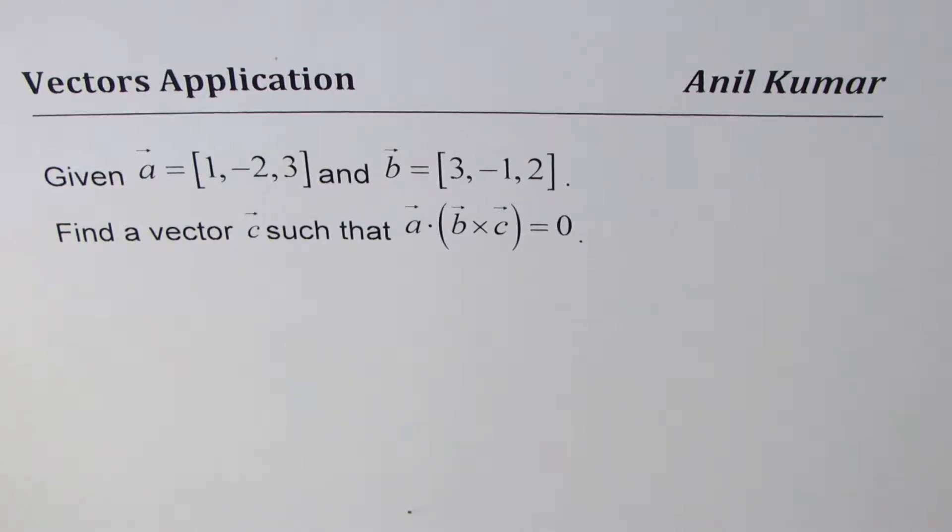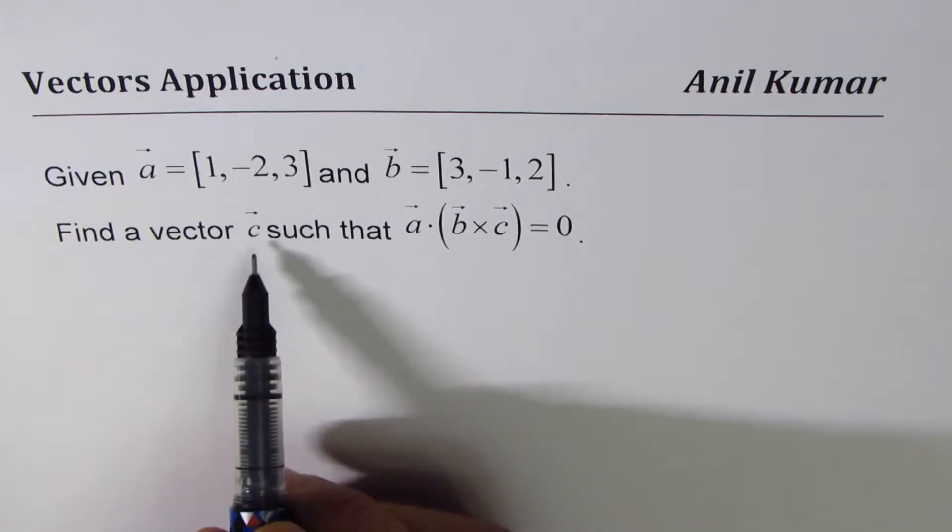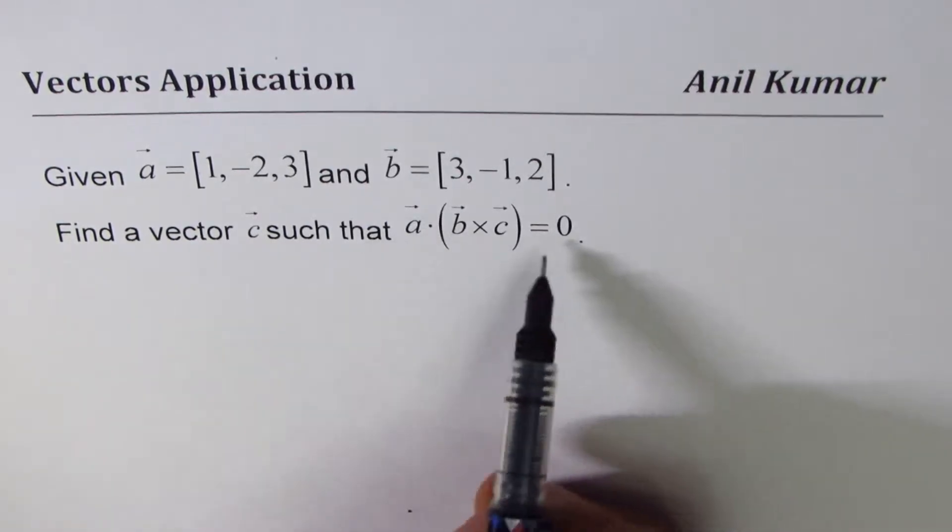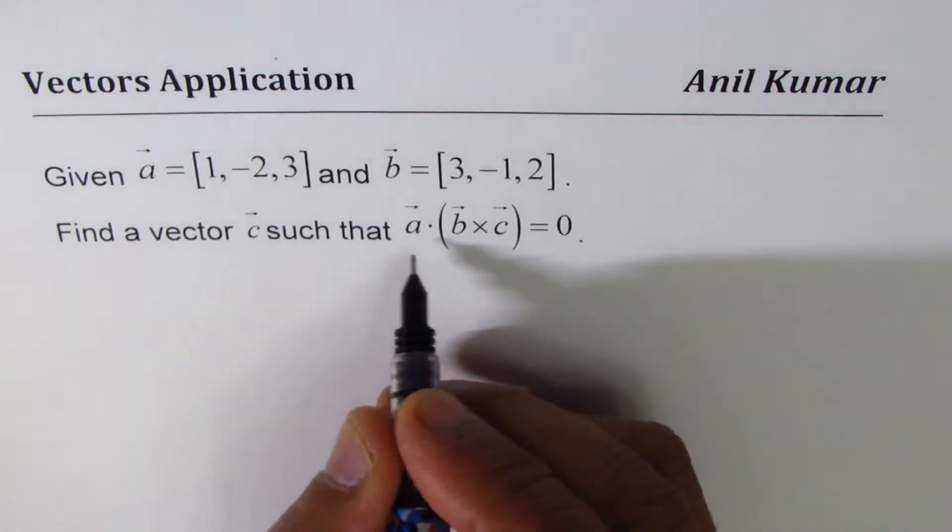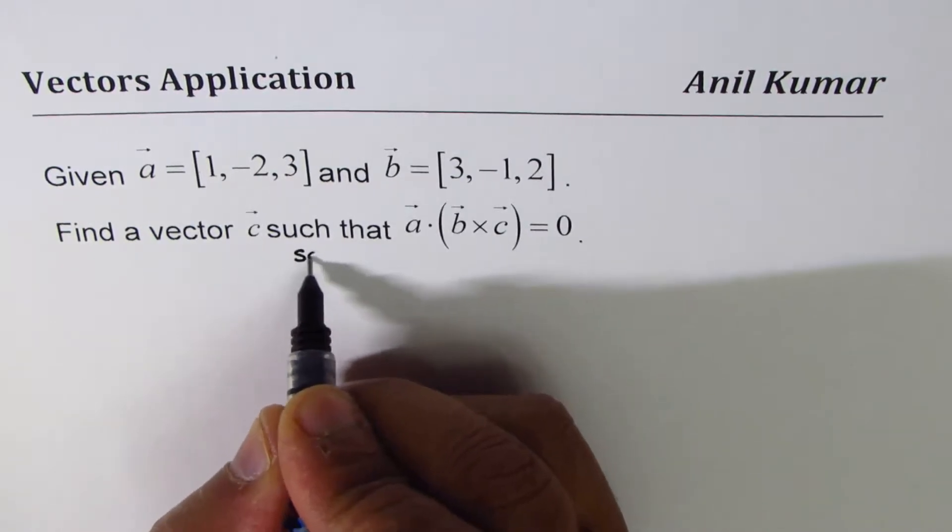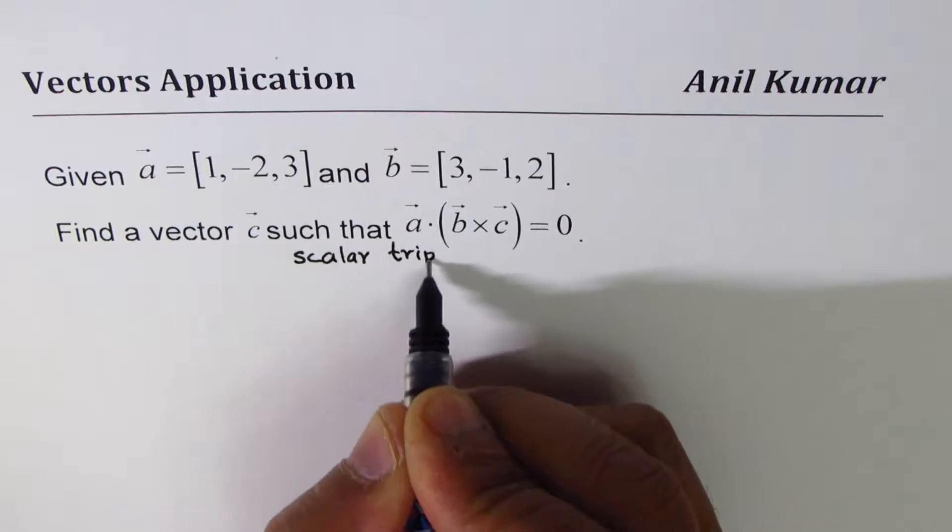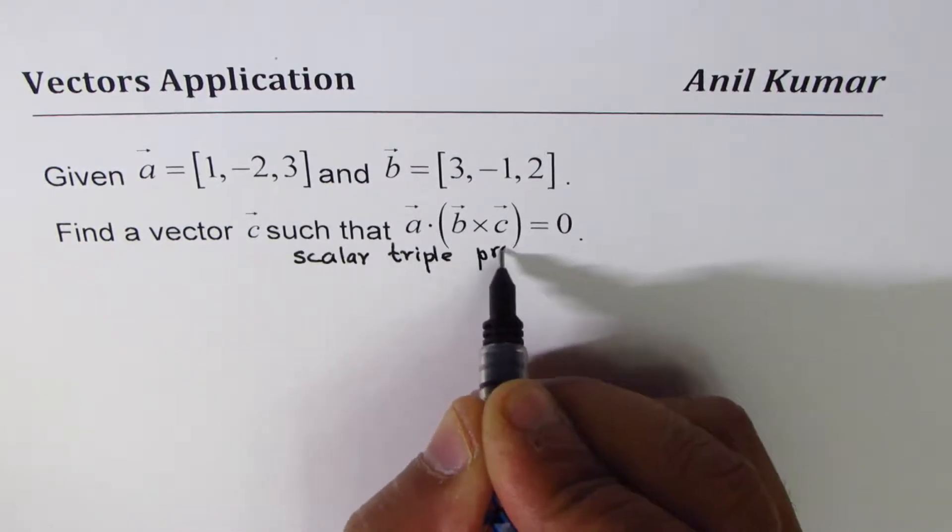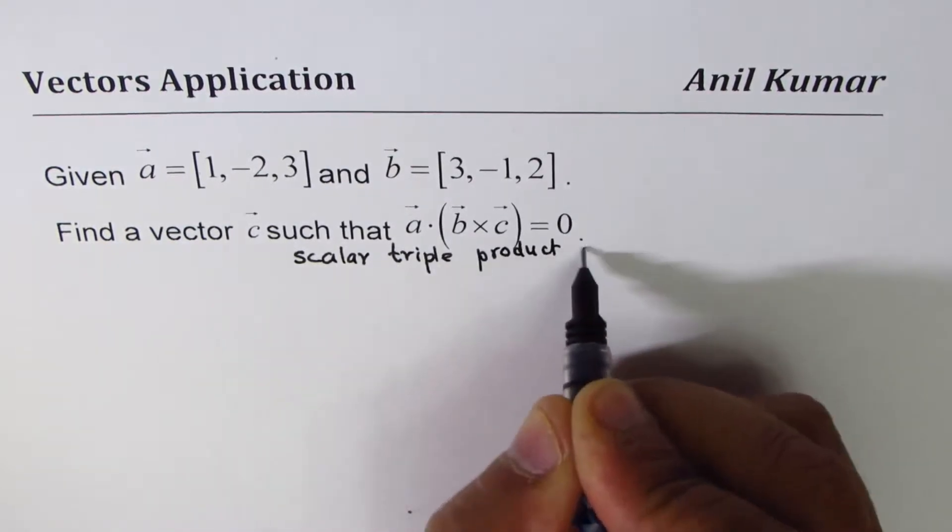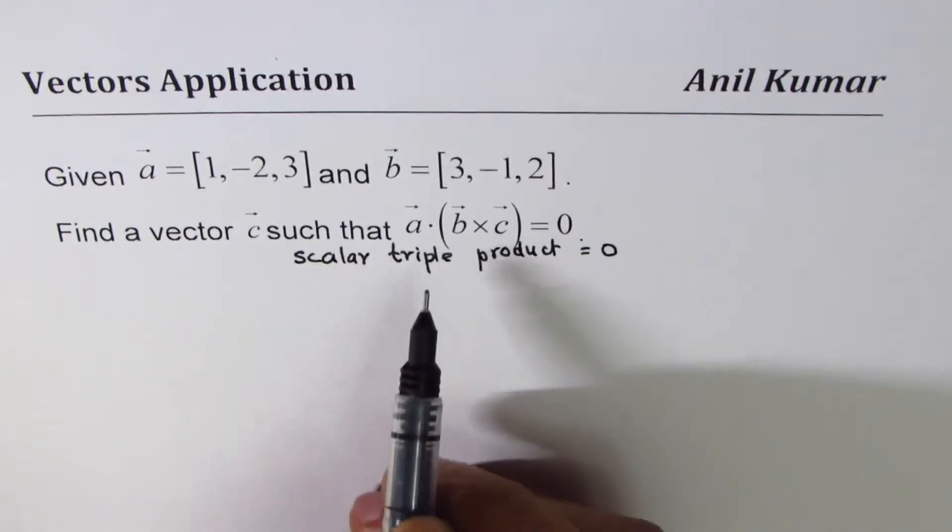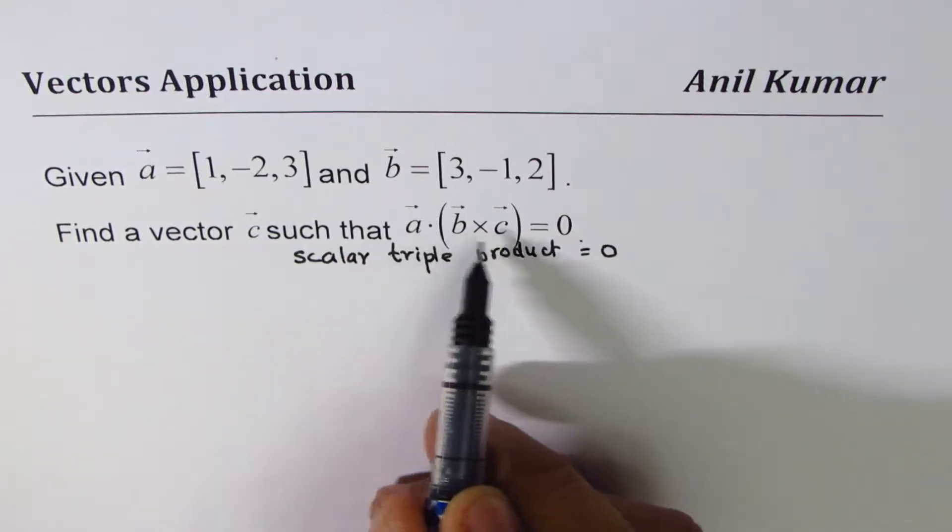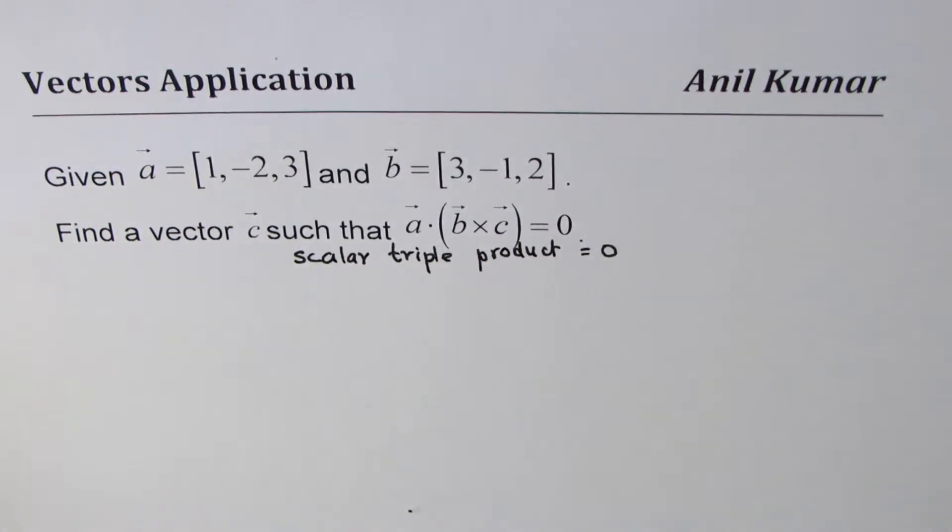You can pause the video, answer my question, and then look into my suggestions. Let's analyze this question. We need to find a vector c so that this scalar triple product equals 0.